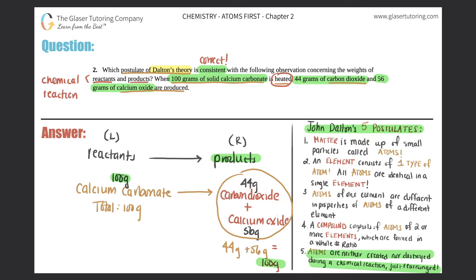The fifth postulate states that atoms are neither created nor destroyed during a chemical reaction, they're just rearranged. But the key is that they cannot be created nor destroyed. The amount of matter, the amount of atoms have to stay exactly the same. So Dalton's fifth postulate.